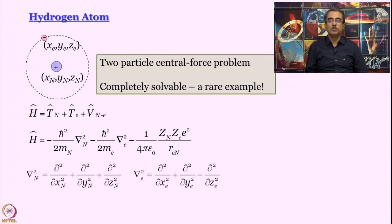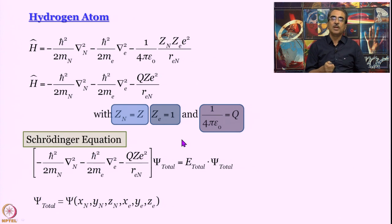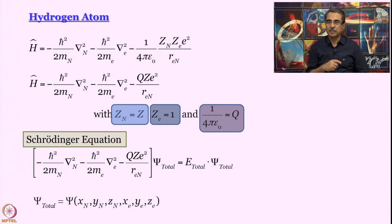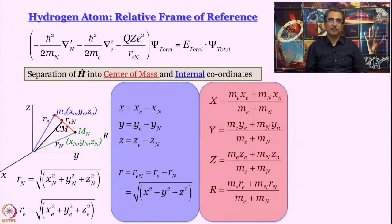We have to write the Hamiltonian in a simpler way before proceeding. The wave function ψ_total is a function of all six coordinates: x_N, y_N, z_N, x_e, y_e, z_e. To simplify, we consider what the frames of reference are. We define internal coordinates where x = x_e − x_N, y = y_e − y_N, z = z_e − z_N — essentially moving the origin from an absolute coordinate system to where the nucleus is.